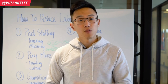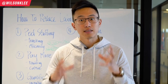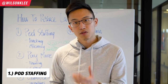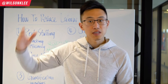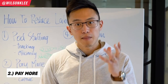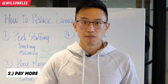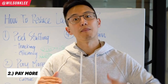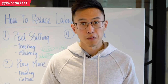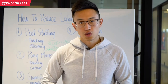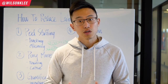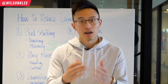So there you go — the five ways to reduce your labor costs. Number one is pod staffing: identify the max amount of people your minimal staff can serve, then scale up or down depending on traffic. The second thing is to pay more — pay industry average or better. Not only does that make for better culture, it lowers your turnover rates, which in turn lowers training time and costs, allowing you to save a ton of money.